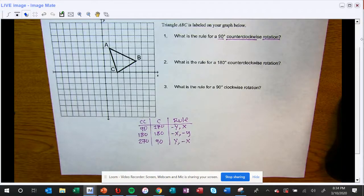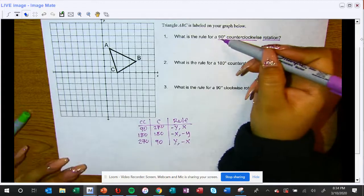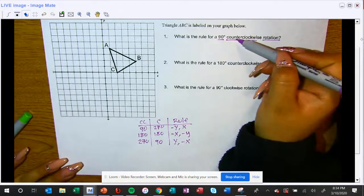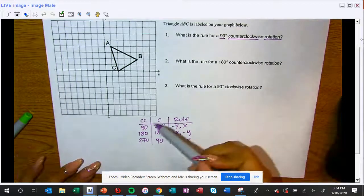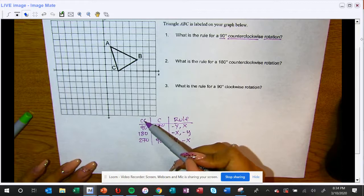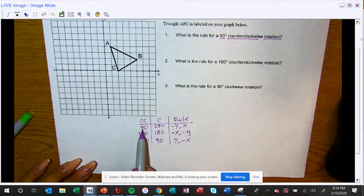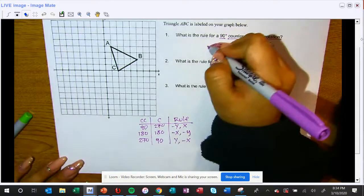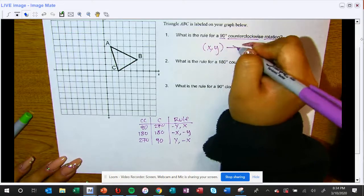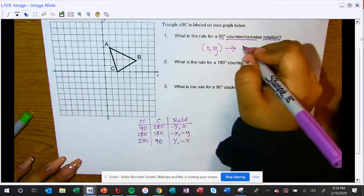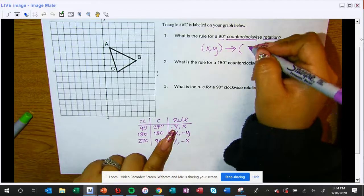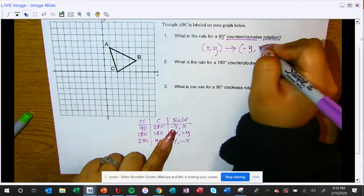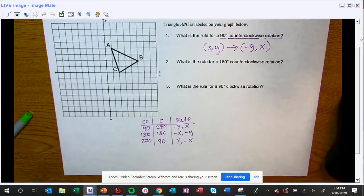For the rule for a 90 degree counterclockwise rotation, I'm going to look at counterclockwise, look at 90, and go straight across. This is my rule. Remember that your rules always start off like this X comma Y, so now I'm just going to copy this here: negative Y comma X. There, I got my answer, nothing else needs to be done.